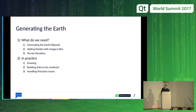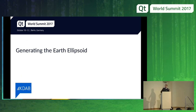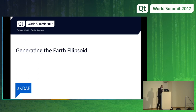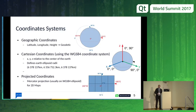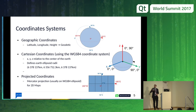So what do we need to generate the Earth? We need to generate the Earth ellipsoid. An ellipsoid is like a sphere that you would have left on the floor and that would have been deformed slightly — kind of a sphere, but with small deformations. Before we talk about that, we need to talk about coordinate systems. Usually on Earth, when you want to describe the position of something, you're going to use geographic coordinates: latitude, longitude, and sometimes altitude.